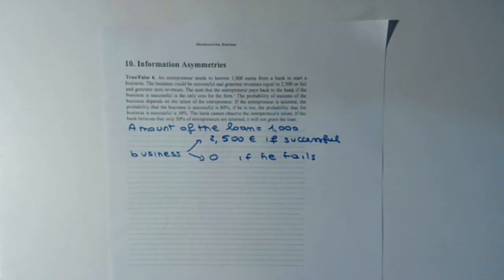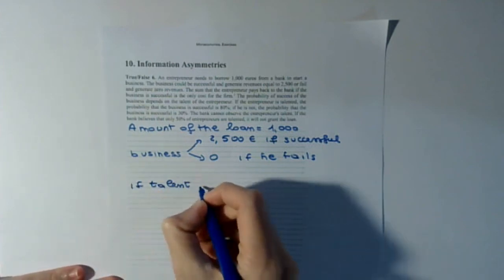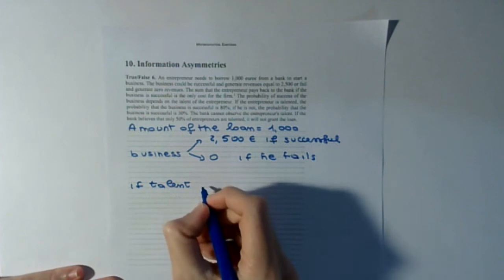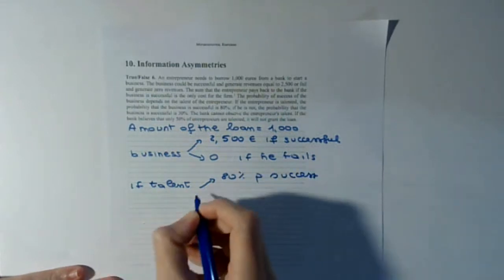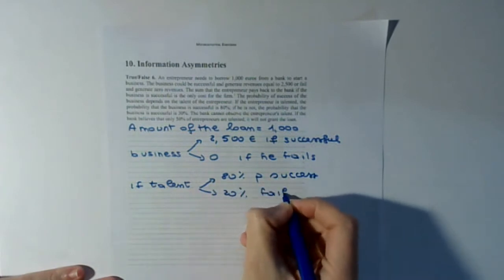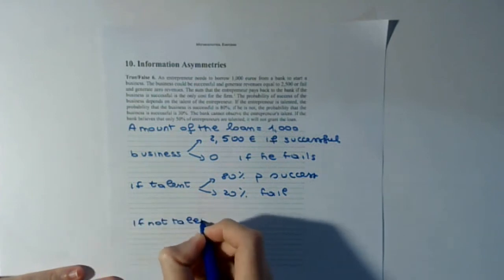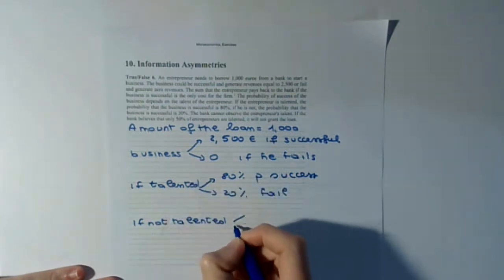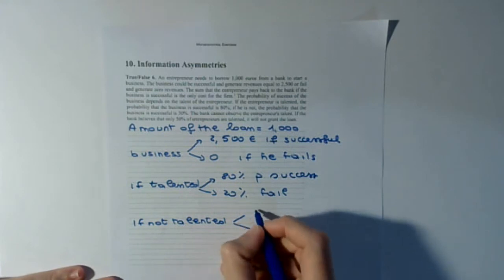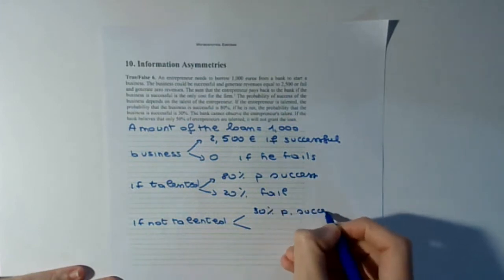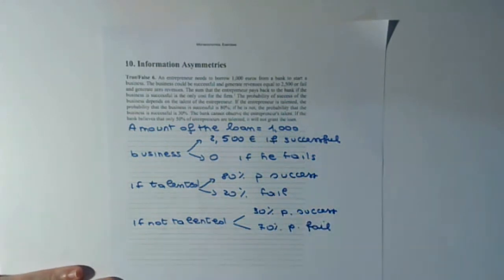The probability of success depends on the talent of the entrepreneur. If there is talent, the probability of success is 80% and probability of failure is 20%. If the entrepreneur is not talented, the probability of success is only 30% and the probability of failure is 70%.